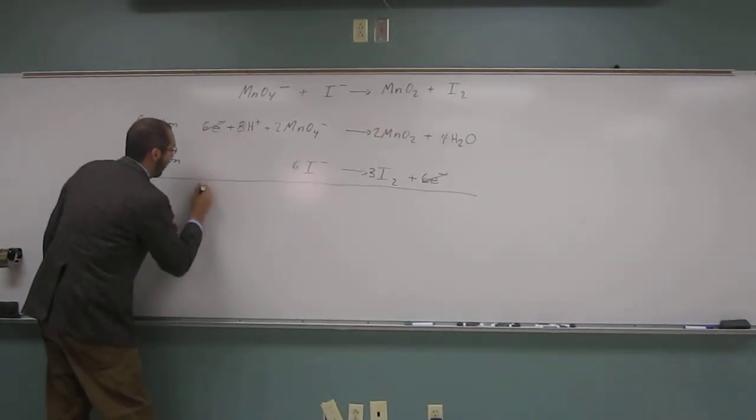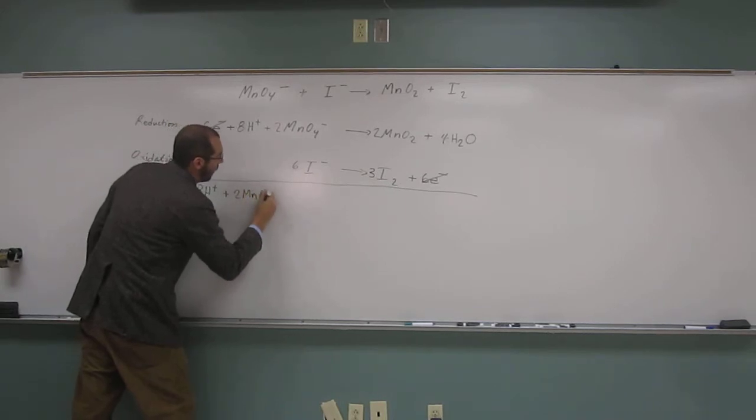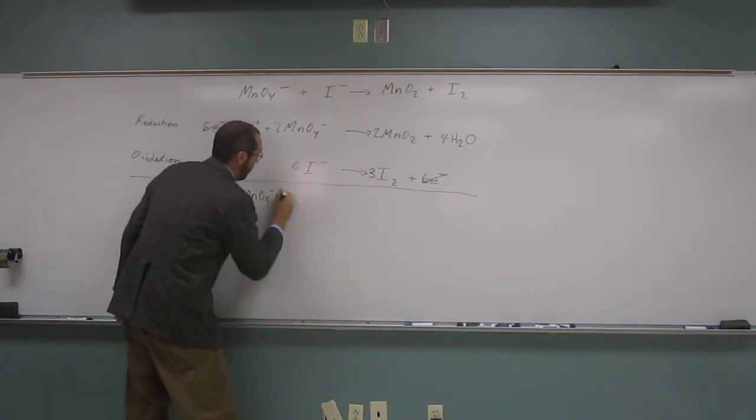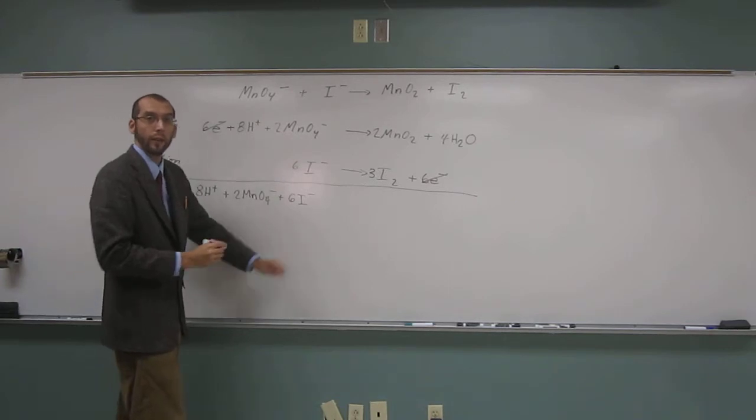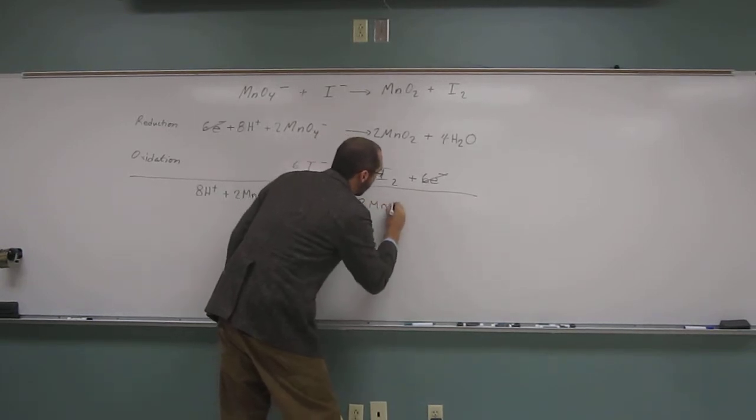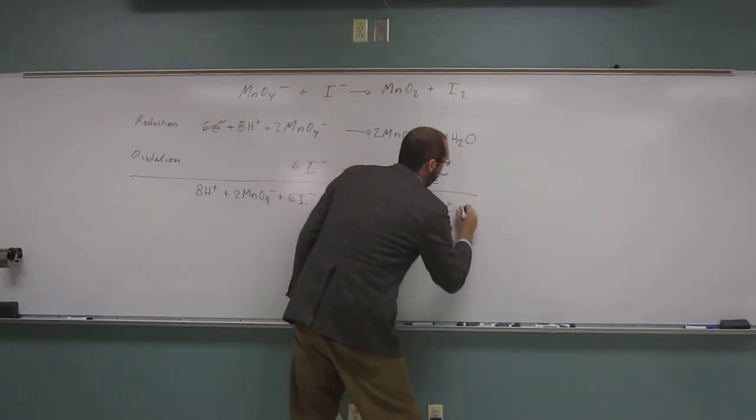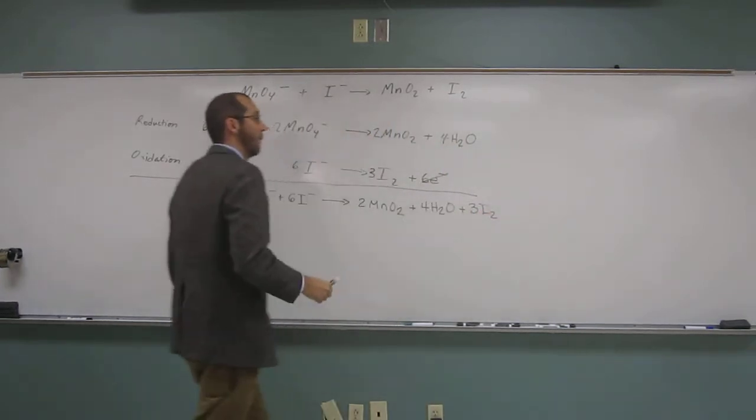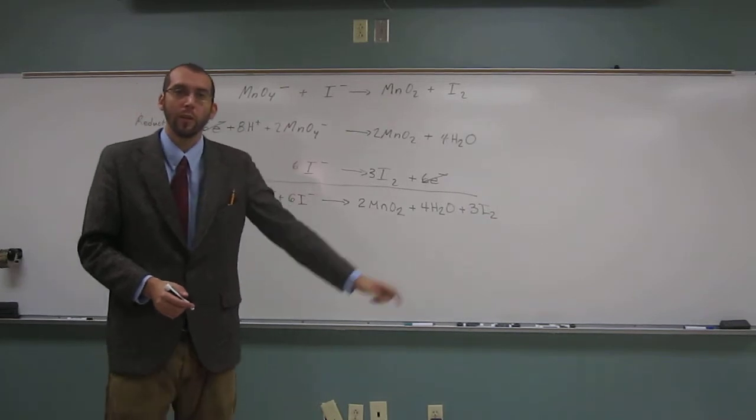So now we can add those two reactions up. Eight protons plus two permanganates, 2MnO4-, plus six iodides goes to two manganese(IV) dioxide, 2MnO2, plus four waters, 4H2O, plus three I2. If it asked us to have balanced it in an acidic solution, this would have been the balanced acidic solution equation.